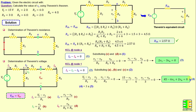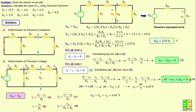By combining the two equations, we derive one equation in terms of VA. This gives VA = 45/7 = 6.43 volts. Therefore, Vth = Voc = VA = 6.43 volts.